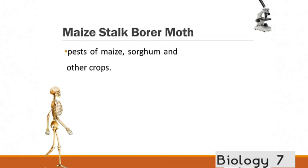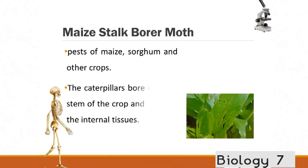Another detrimental insect is the maize stalk borer moth. So this is another pest of maize. Also a pest of sorghum and other crops. As you can see there there's damage the caterpillars have done. They've bored into the stem and they've caused problems to the internal tissues. And that is another pest that the farmers like to avoid.